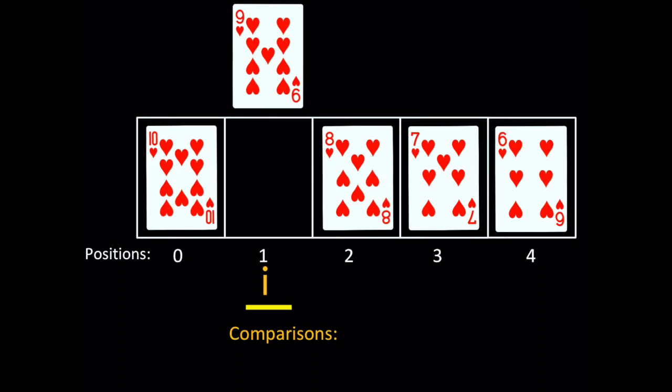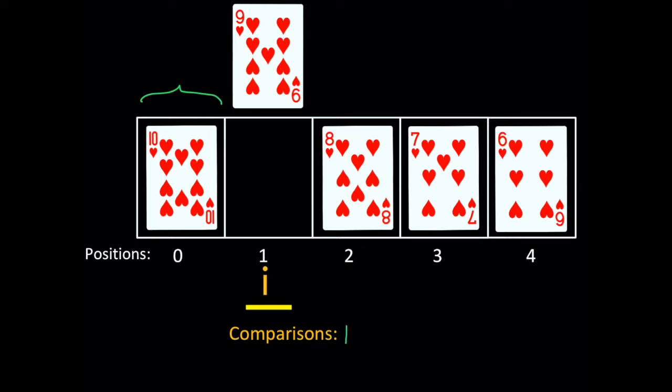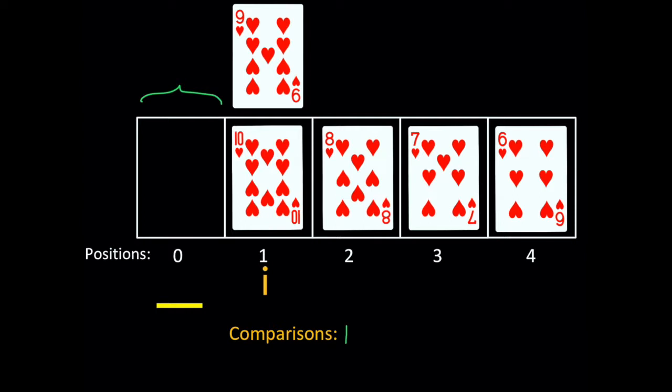The values left of i are sorted, so should 9 go right of 10? No, it should not go right. Sort pose can't go any farther left, so 9 goes at position 0.